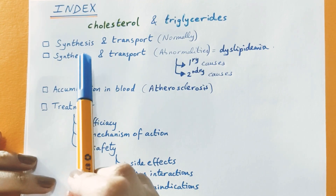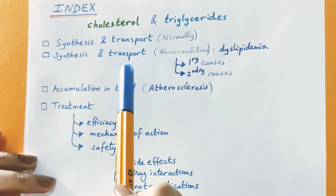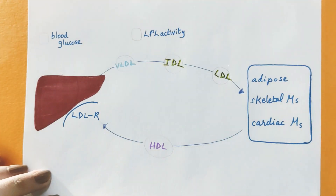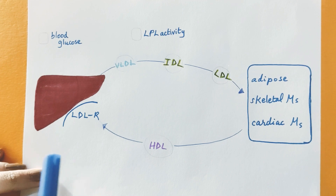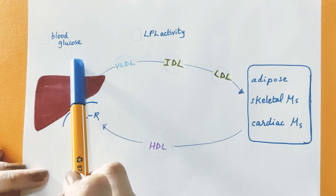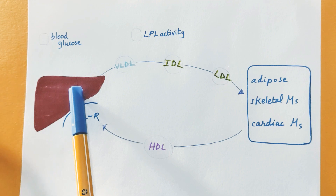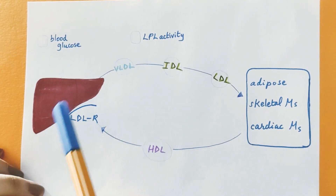In this video we will be speaking about the normal synthesis and transport of cholesterol, and in the next video we are going to see the opposite. Point number one: normally cholesterol is synthesized from blood glucose and fatty acids. This is the step that statins act on to achieve cholesterol lowering in cases of hypercholesterolemia.